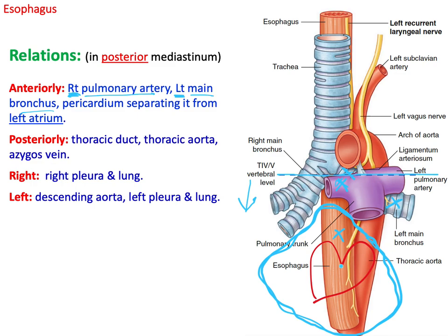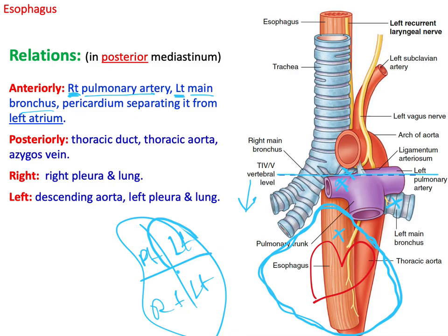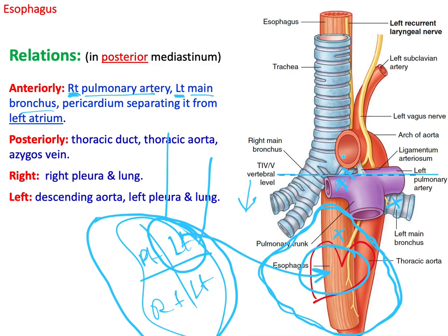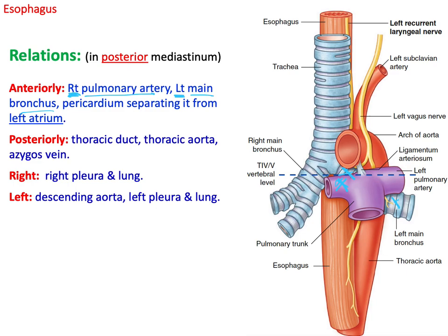The pericardium separates the left atrium from the esophagus. The heart has a right atrium, left atrium, right ventricle, and left ventricle. The left atrium is located in very close relation just anterior to the esophagus, but it is separated from the esophagus by the pericardium that encircles the heart.